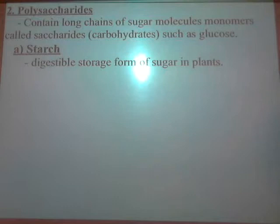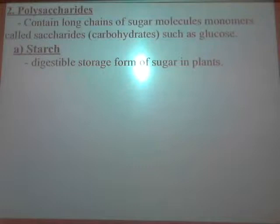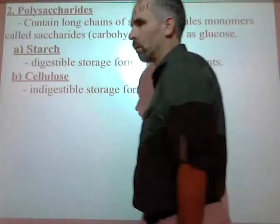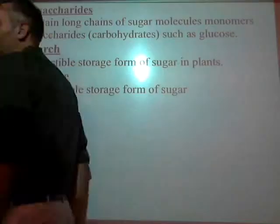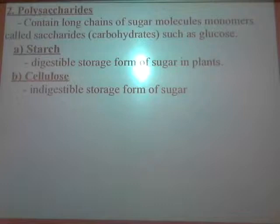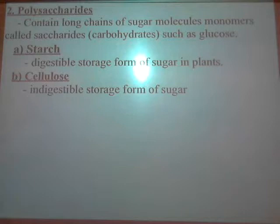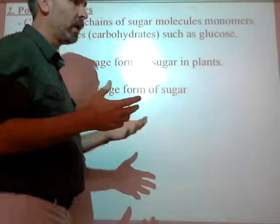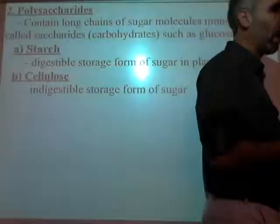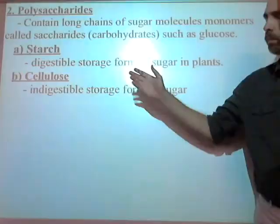Another way a plant can store sugar is cellulose — the indigestible storage form of sugar. That's what plants use to build things: stems, leaves, bark. I can't eat cellulose; it goes right through me. Another name for cellulose in our diets is fiber. If you've ever bought a box of raisin bran, the bran is the part you can't digest — that's cellulose, pushing everything else through.